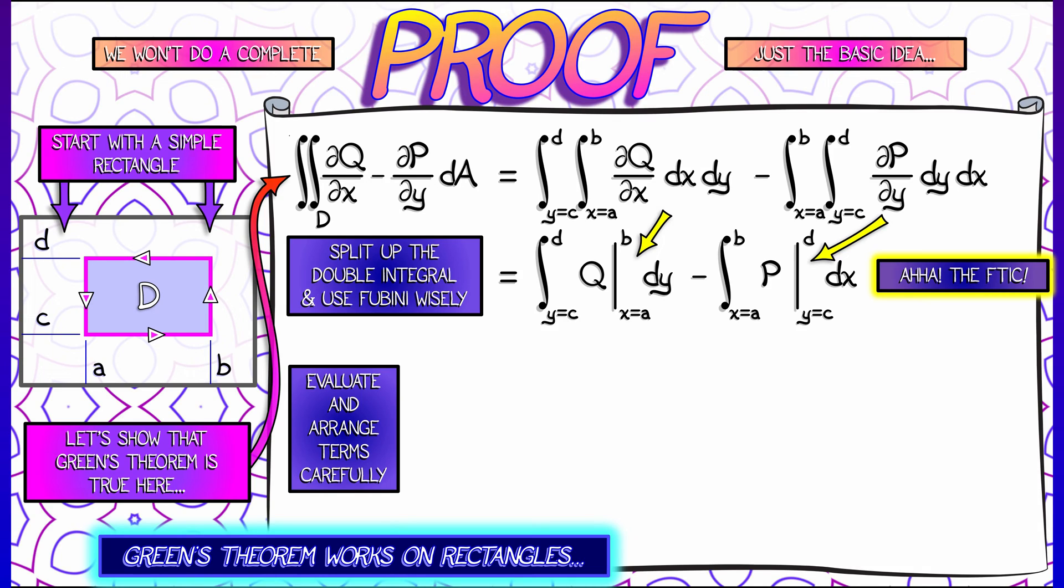Now, the only thing that's left to do is this evaluation with some careful rearrangement. Q, as x goes from A to B, gives me Q of B, y minus Q of A, y. Integrating that with respect to y, as y goes from C to D, gives me a pair of path integrals along these vertical paths, the sides of the rectangle going up and down.